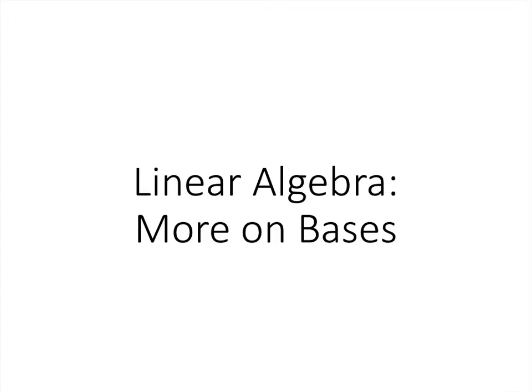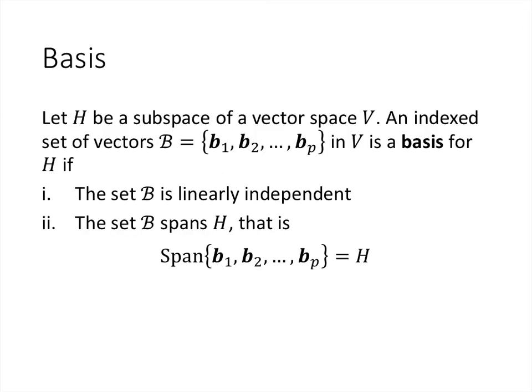In this lecture, we're going to go into more depth talking about bases, which we defined in the previous lecture. Remember that we have this definition: if we have a vector space V with a subspace H and a set of vectors B, which is just some collection of vectors b1, b2, up through bp, then we say that set B is a basis for H if the span of those vectors equals H and that set is linearly independent.